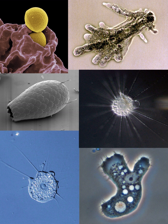Amoebas do not form a single taxonomic group; instead, they are found in every major lineage of eukaryotic organisms. Amoeboid cells occur not only among the protozoa, but also in fungi, algae, and animals. Microbiologists often use the terms amoeboid and amoeba interchangeably for any organism that exhibits amoeboid movement.